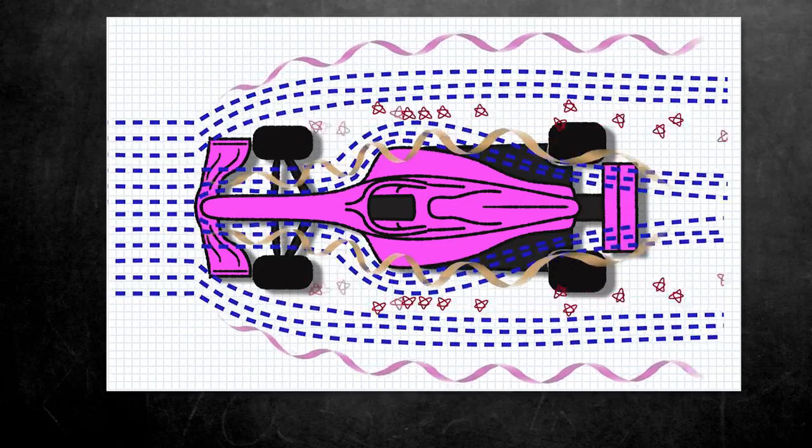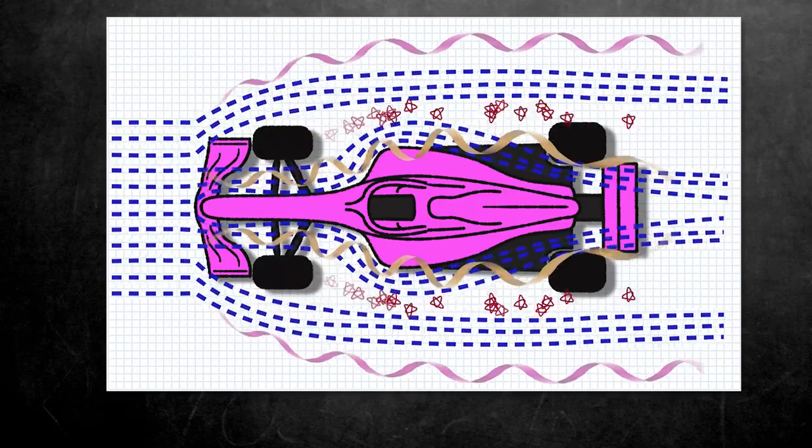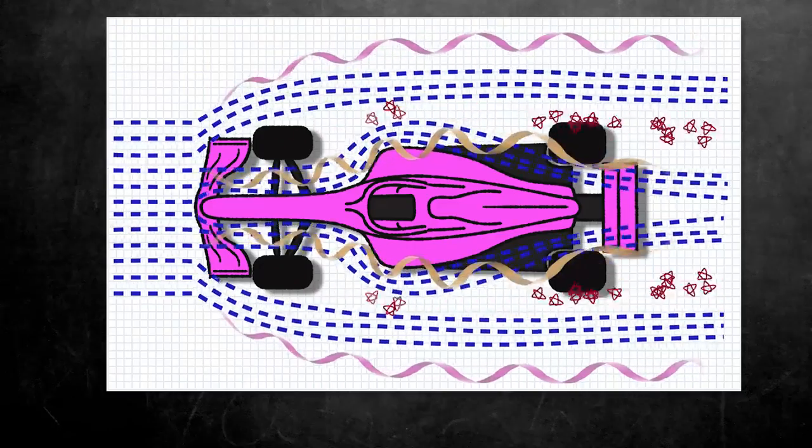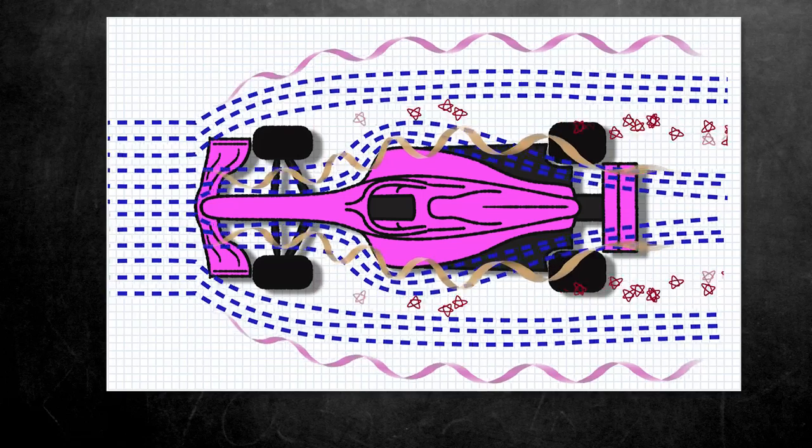These vortices are the bouncers of an F1 car, telling the drunk tyre airflow to keep on moving sir, keep on moving. So that's the basics of how you control airflow and coax it into doing exactly what you want it to do.